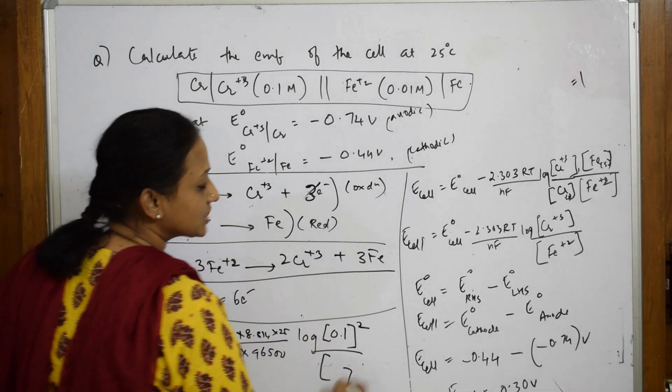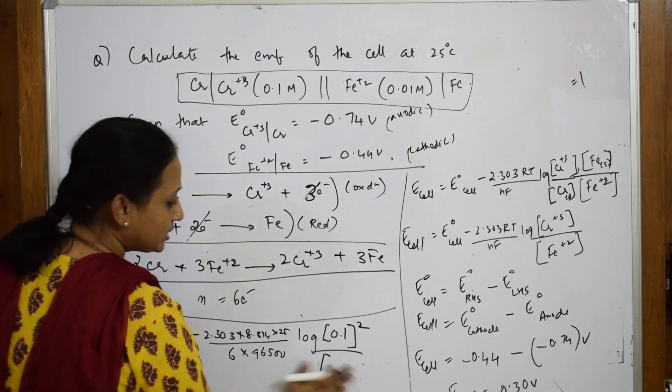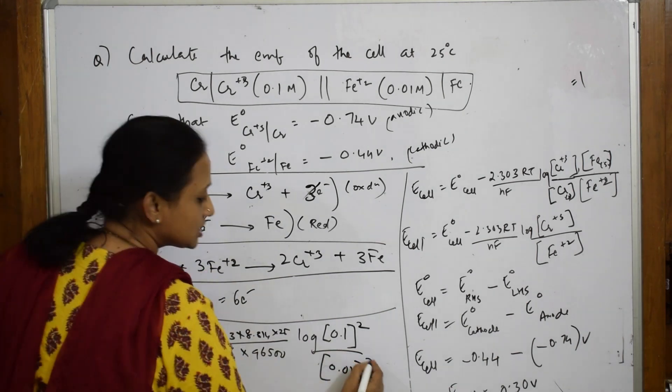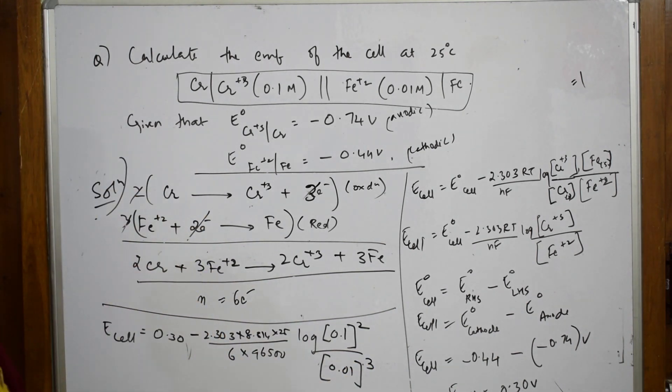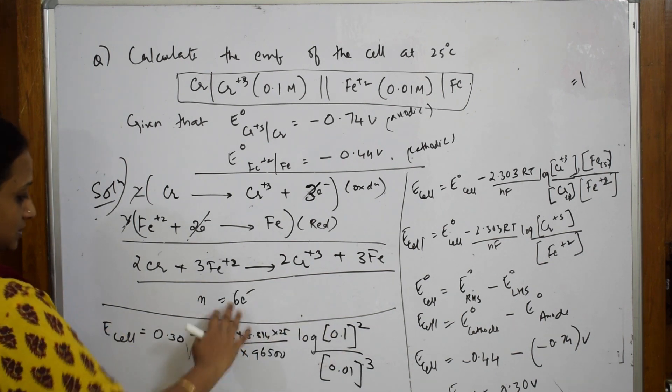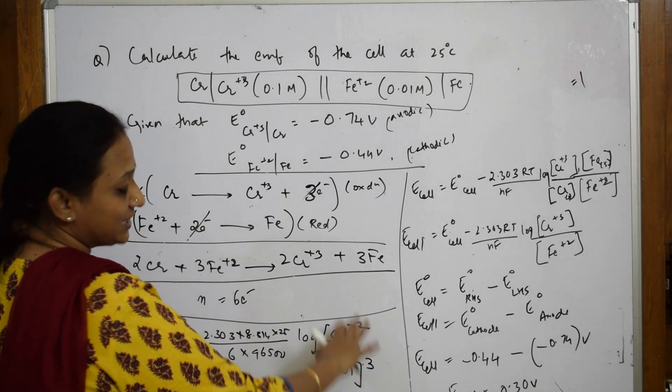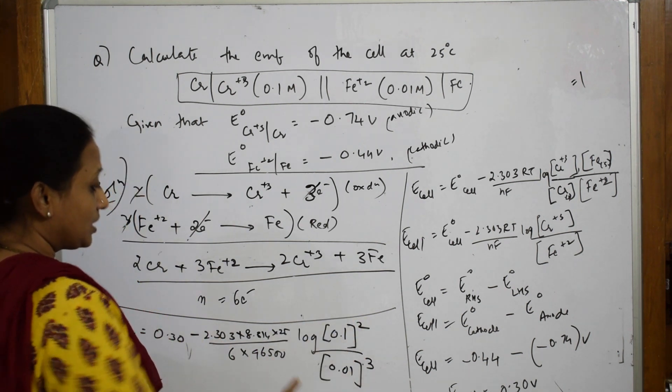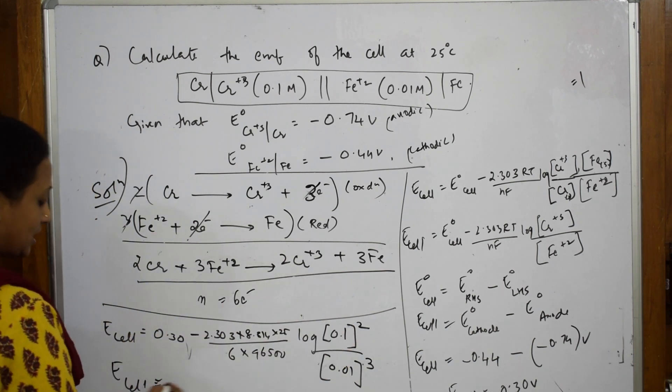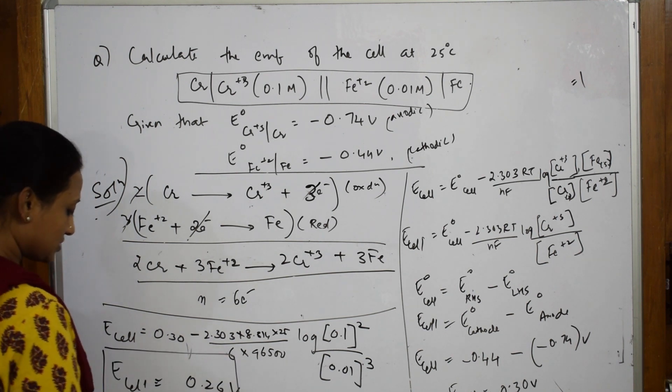After solving, this becomes log 10, which equals 1. When you substitute and calculate everything, you get an answer of 0.26 volts. This is your EMF of the cell.